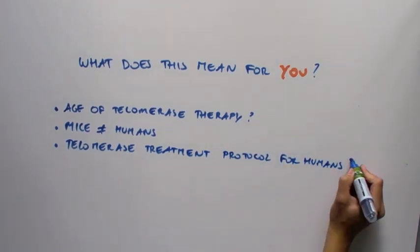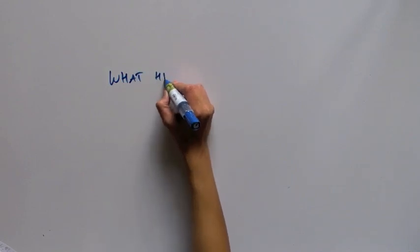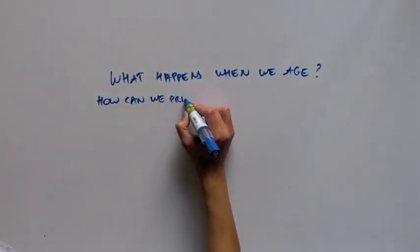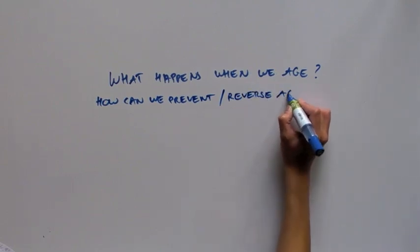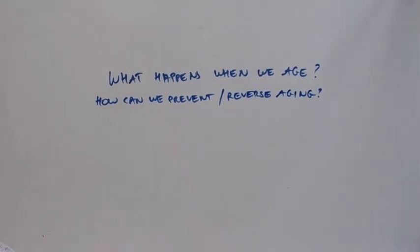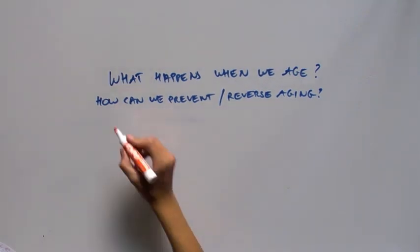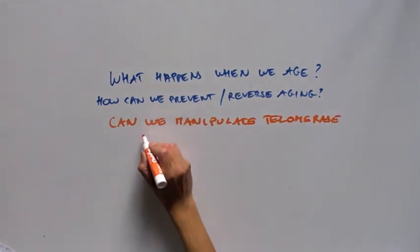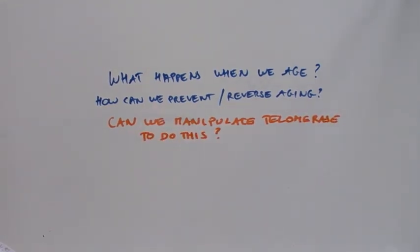So as you can see, scientists are making progress to understand what happens when we age and how we can prevent or even reverse it. But we still have a lot of work to do to understand how this can be applied to humans. But this study is definitely a milestone in the field of aging, and a proof of principle that telomerase is an important target for aging research or premature aging-related diseases.